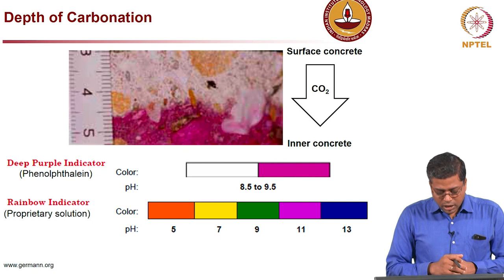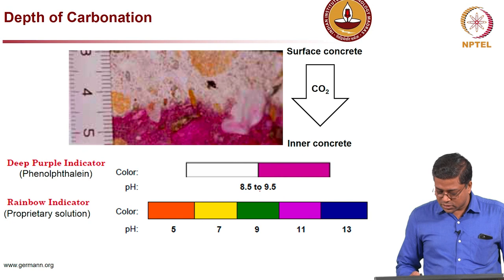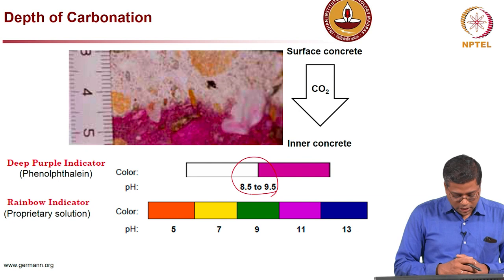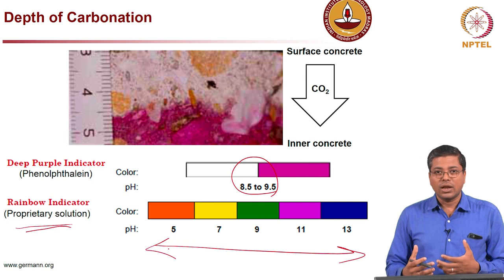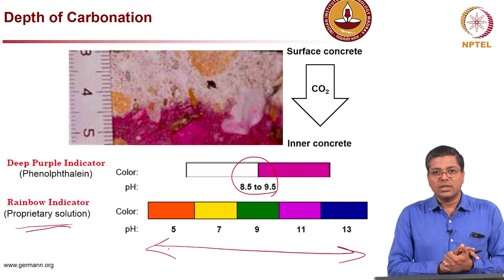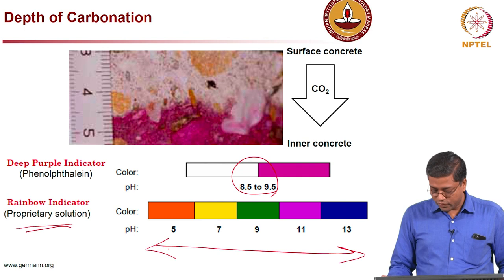There are also other pH indicators available, like the rainbow indicator. Phenolphthalein is widely used and shows a color change around pH 9. The rainbow indicator gives a wider range — you can see whether the pH is at 13, 11, or 9 — but distinguishing between colors can be difficult. It is useful if you want to know exactly what the pH is at different depths.